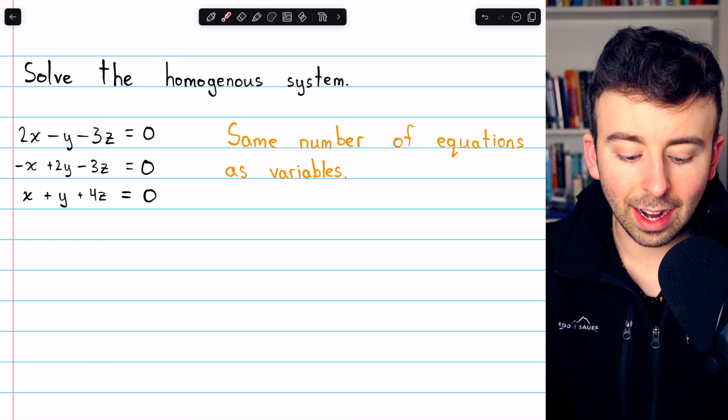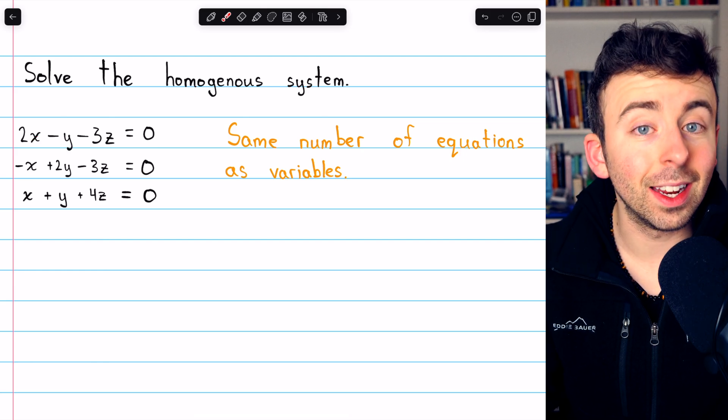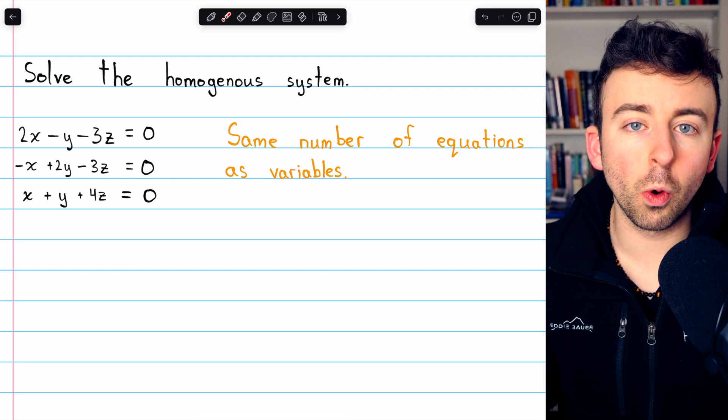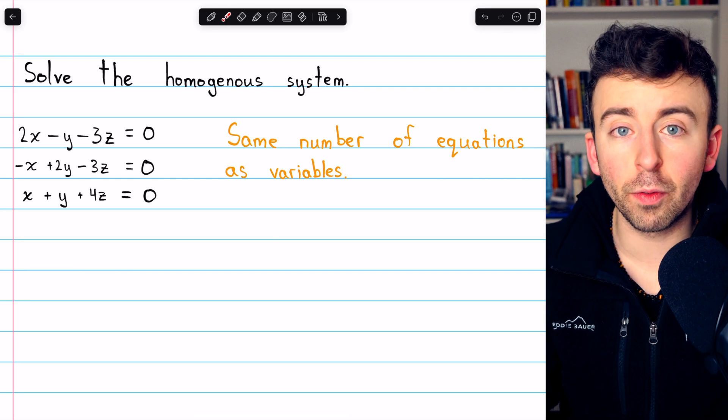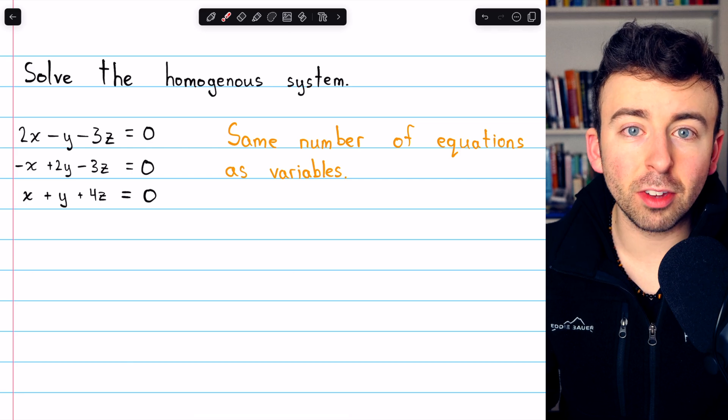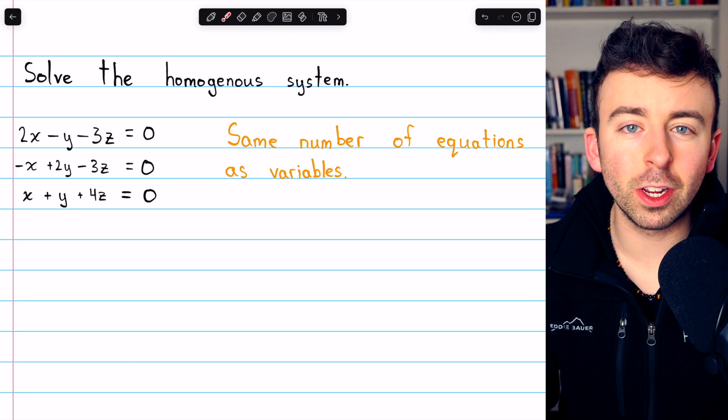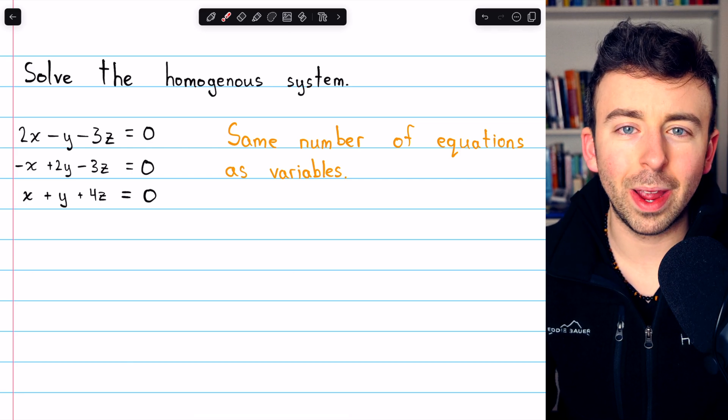Because in a homogeneous system, the constants are all zero. So we could just plug in x equals zero, y equals zero, and z equals zero, and for sure have a solution. That's called the trivial solution.